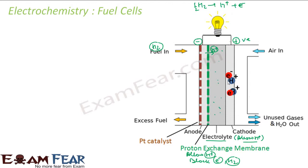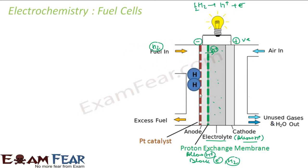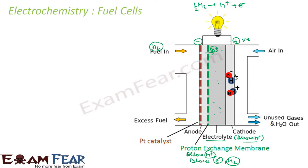Now we have H+ and E− ions on the cathode side. The oxygen is bubbled in from here. The H+ ions, E− ions, and oxygen all combine to form water, and the water drains out. That is the logic behind the fuel cell. Any excess hydrogen that was not broken goes back through the excess fuel path.